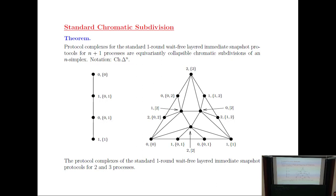Standard chromatic subdivision is the colored analog of barycentric subdivision. If you have colors on the vertices of a simplicial complex, barycentric subdivision is prohibited. For an edge with two colors — black and white — you're not allowed to put a vertex in the middle without increasing the number of colors, but you are allowed to put in two, and two is the minimal number. The coloring will then be black, white, black, white.